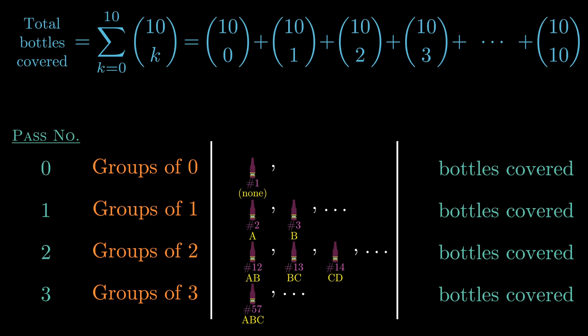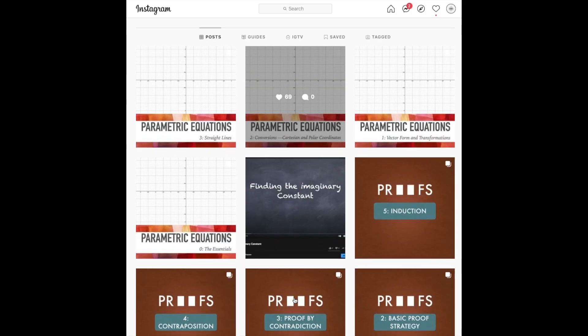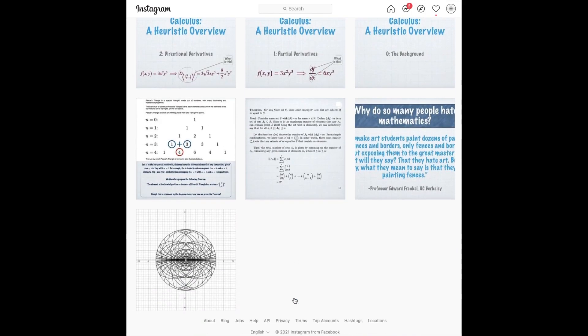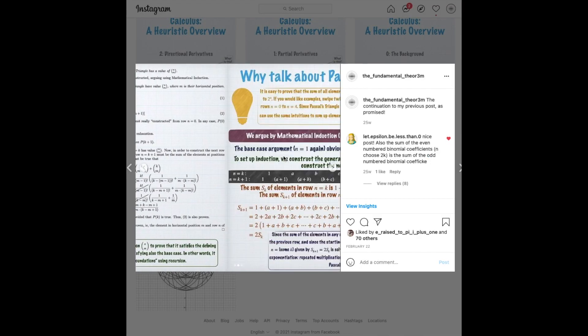And now, what do you do with this summation? Well, if you know your identities, you'd know that this is simply 2 to the 10th, which is 1024. The identity I refer to is the identity that the summation as k goes from 0 to n of n choose k, is always 2 to the n for all n. And if you want proof of that, you can check out my post on my Instagram account, The Fundamental Theorem, that demonstrates how you get that.